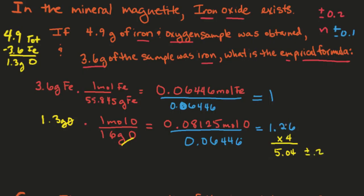All the other numbers before 4 did not work. So because I did that 1 times 4, I have to do this 1 times 4. And now we know the empirical formula of this ore. It's going to be Fe4O5.